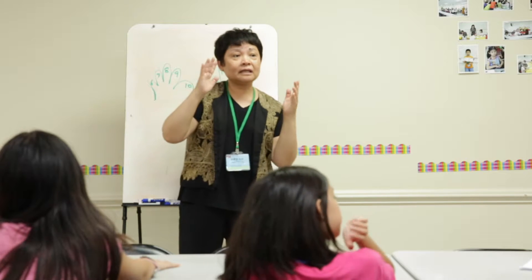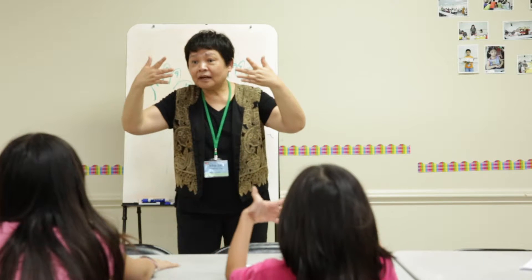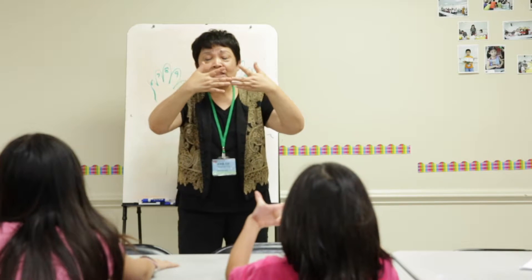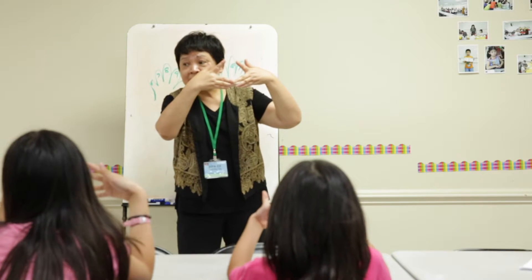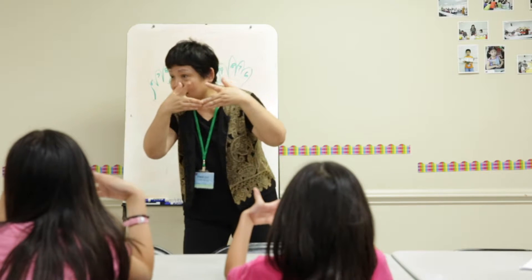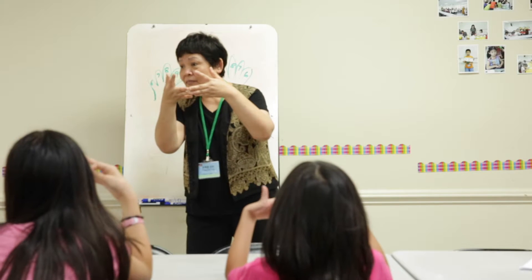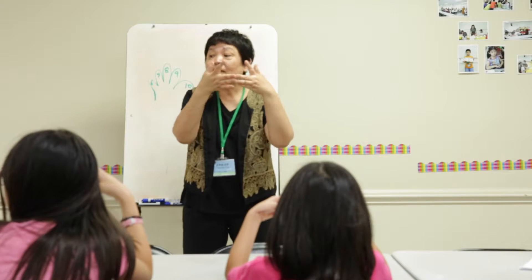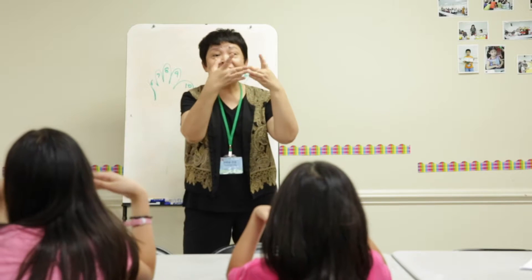Let's try eight times eight. What finger is supposed to be touchdown? Eight times eight — middle finger, right? Touchdown. How many fingers represent the tens? Six — so that means sixty. How many fingers here? Two times two equals four. So eight times eight equals sixty-four.